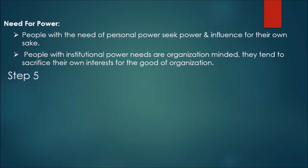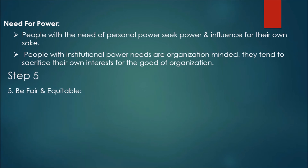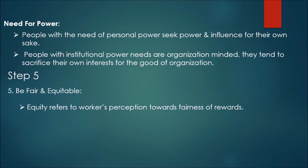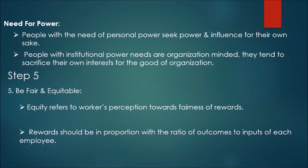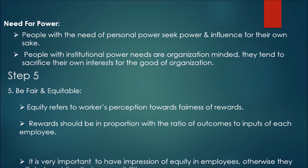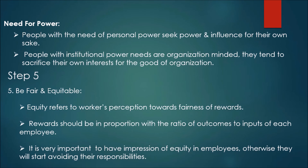Need for Power — people with institutional power needs are organization-minded and tend to sacrifice their own interests for the good of the organization. Step 5 is Be Fair and Equitable. Equity refers to workers' perception of the fairness of rewards. Rewards should be in proportion with the ratio of outcomes to inputs of each employee. It is very important to create an impression of equity among employees; otherwise, they will start avoiding their responsibilities.